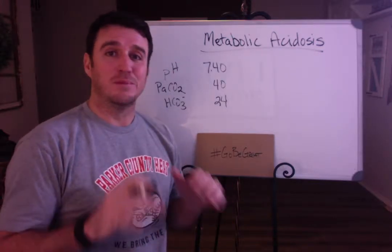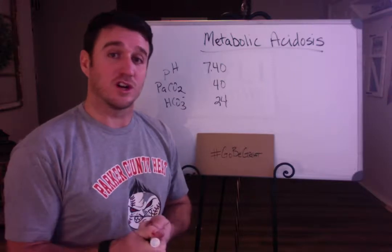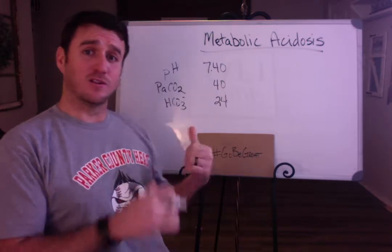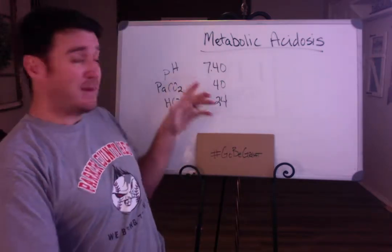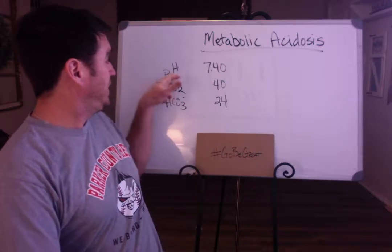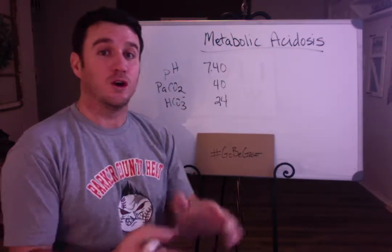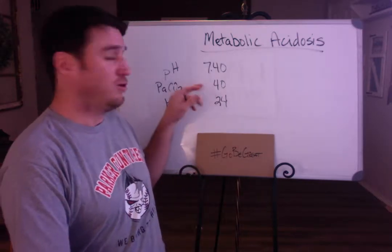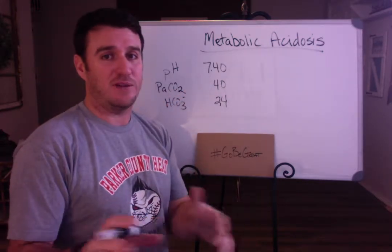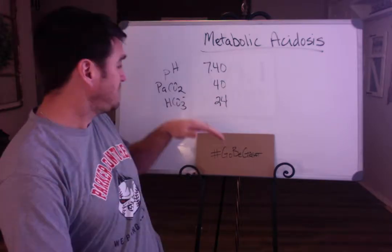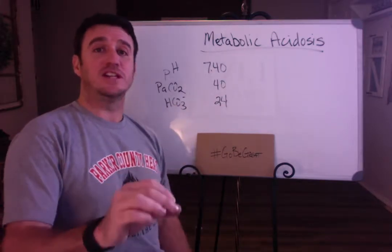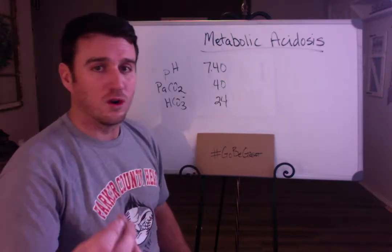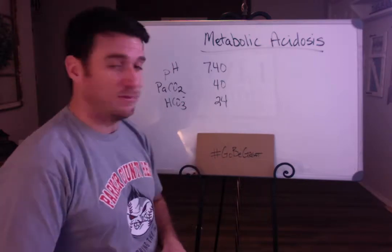Today we're going to get into metabolic disturbances and start with metabolic acidosis. You can see on the board our normal blood gas values: pH 7.40 is absolute normal, with a range of 7.35 to 7.45. CO2 normal is 40, range 35 to 45 mmHg. Bicarb normal is 22 to 26 — texts vary, but we're going with 24 as normal here.